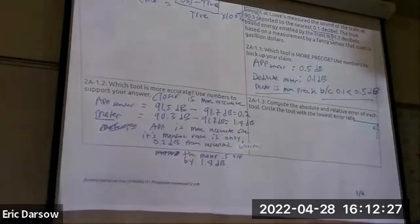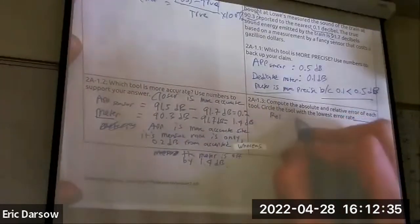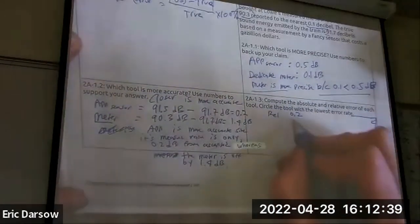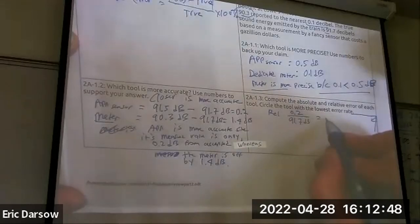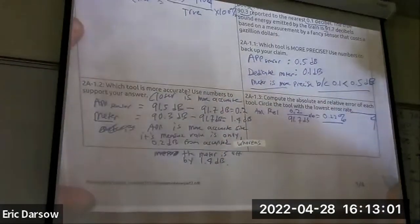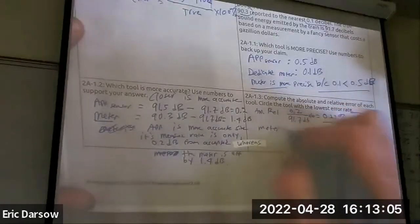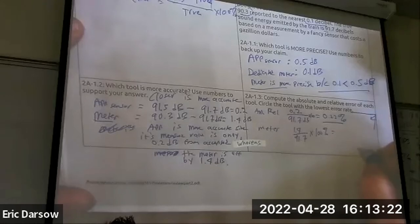Our app sensor: we already have our absolute value, so relative error is 0.2 — how far it was from the real — divided by the accepted value of 91.7, times 100. That's about a quarter percent off. And the meter: 1.4 divided by 91.7 times 100. Alison got 1.5, Amanda got 1.53 percent.